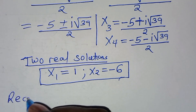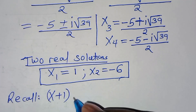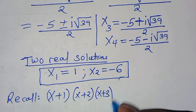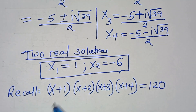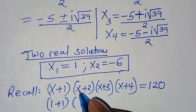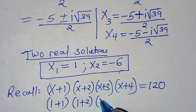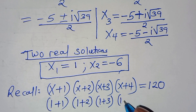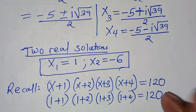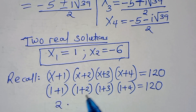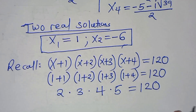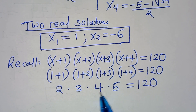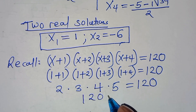Substituting x₁=1: (1+1)(1+2)(1+3)(1+4) = 2×3×4×5. Now 2×3=6, 6×4=24, and 24×5=120. This equals 120, confirming x₁=1 satisfies the equation.